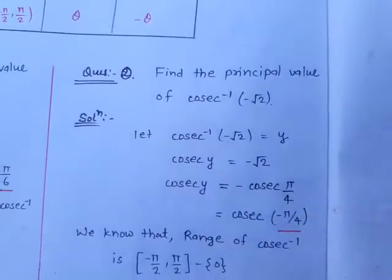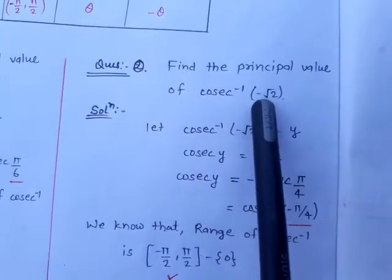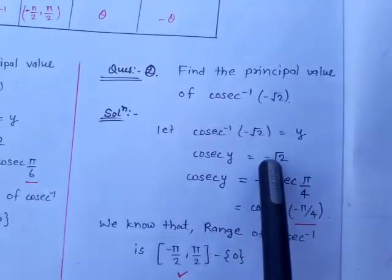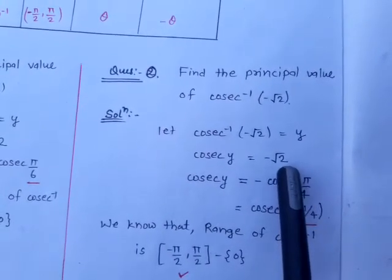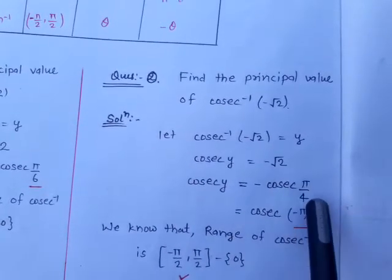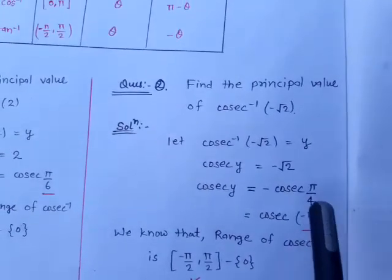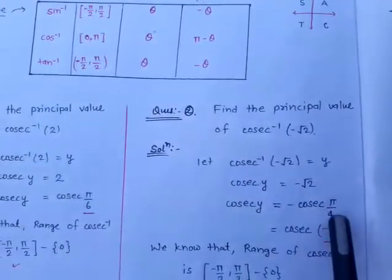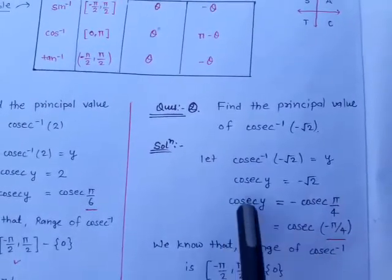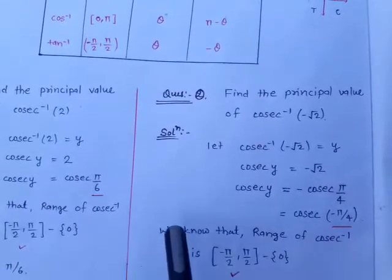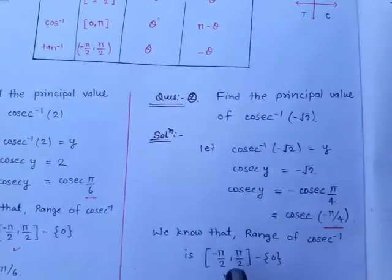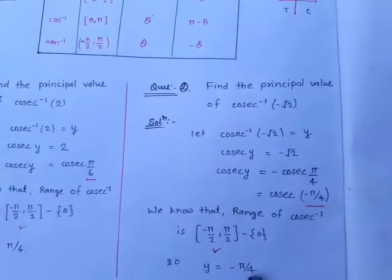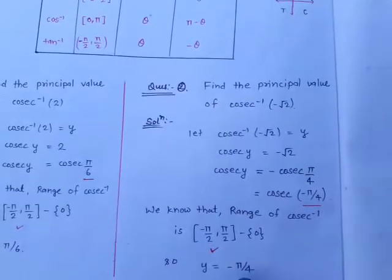For the second question, find the principal value of cosec⁻¹(−√2). Let cosec⁻¹(−√2) = y, so cosec y = −√2. Ignoring the minus sign, cosec(π/4) = √2, so cosec y = −cosec(π/4). Since cosec behaves like sine, theta converts to minus theta, giving cosec y = cosec(−π/4). Checking the range [−π/2, π/2] minus {0}, −π/4 belongs to this range. Therefore y = −π/4, and the principal value of cosec⁻¹(−√2) is −π/4.